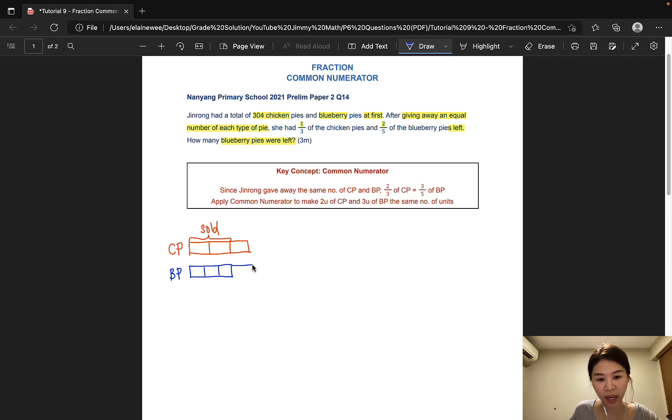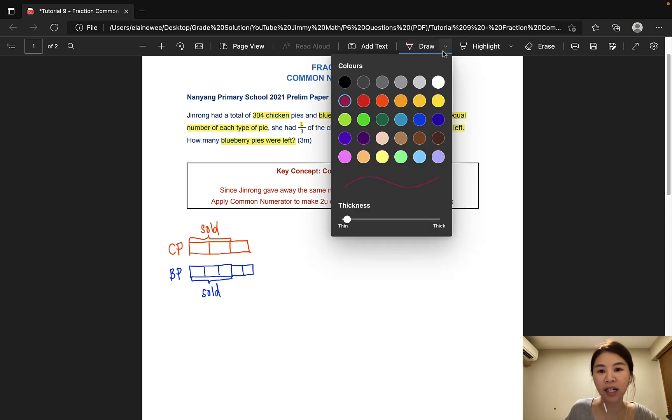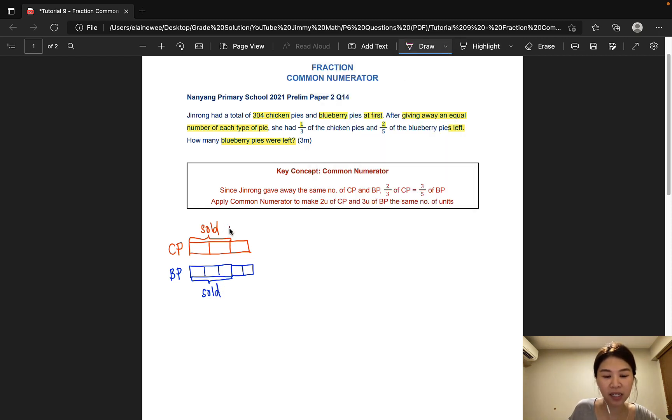So these two units here is actually the same as these three units for the blueberry pies. And then we add on another two units to make up five units all together.